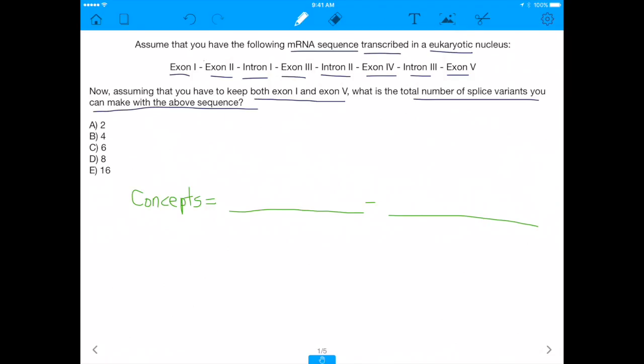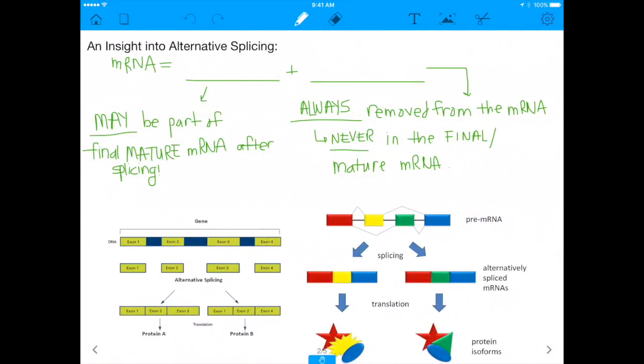So what is the concept being tested here? First of all, I'm going to point out that this is a eukaryotic nucleus. If you go back to the question, you'll see me circle eukaryotic. The reason why that's important is because in eukaryotes, the mRNA is transcribed, but before it goes out to the cytoplasm to get translated, it actually undergoes splicing.